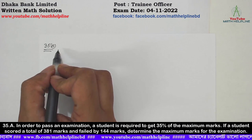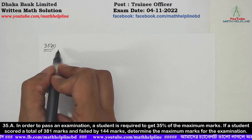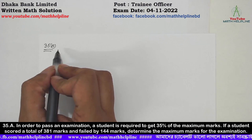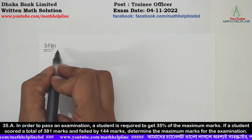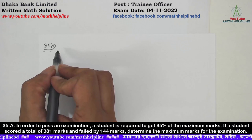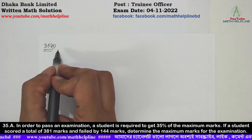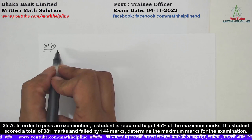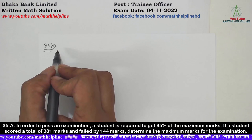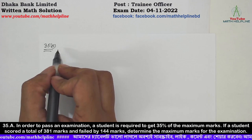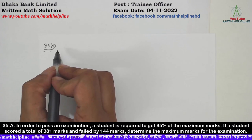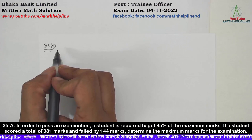If a student scored a total of 381 marks and failed by 144 marks, determine the maximum mark of the examination.